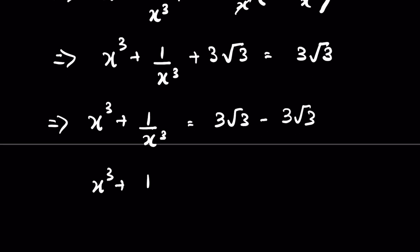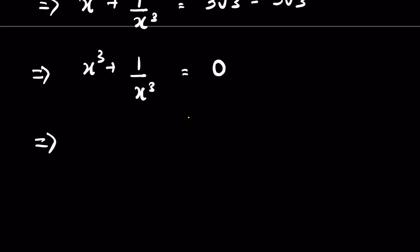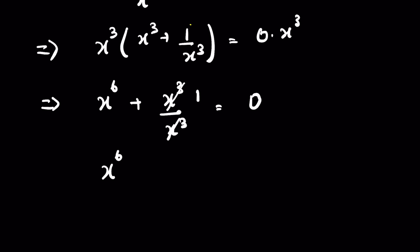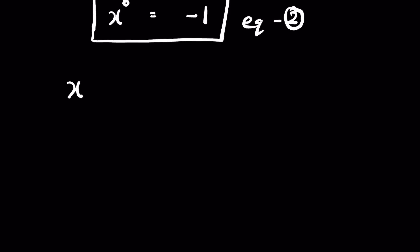Now let's multiply both sides of x³ + 1/x³ = 0 by x³. This gives x⁶ + 1 = 0, so x⁶ = -1. Let this be Equation 2.